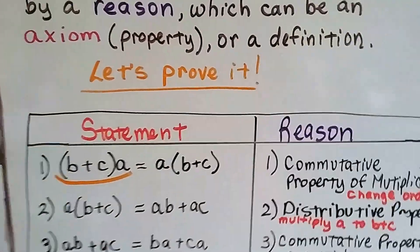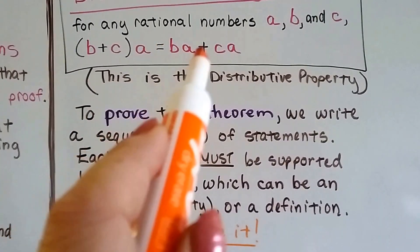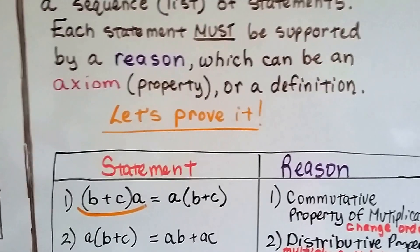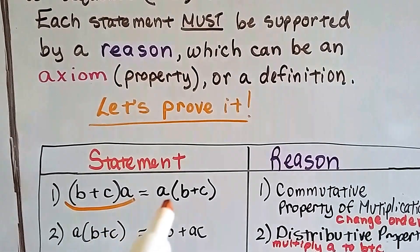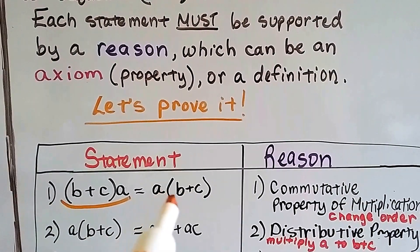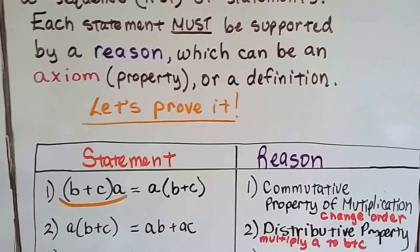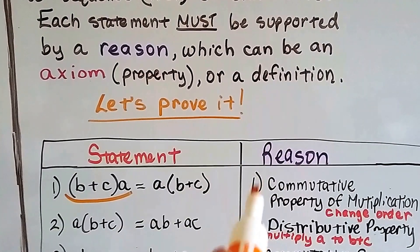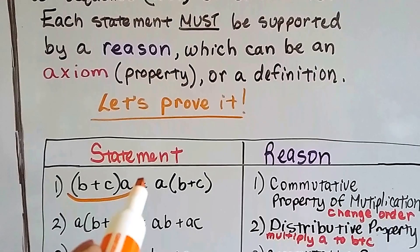We're trying to prove that (b + c)a equals ba + ca. So, (b + c)a equals a(b + c) — the a just moved to the front. That's the commutative property of multiplication, which says we can change the order. That's the reason we can do that.